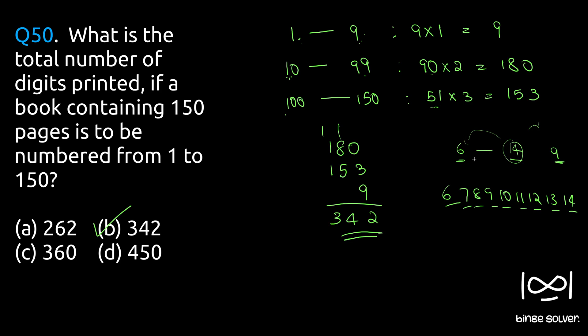That's what we used in all these cases: 99 minus 10 plus 1, 150 minus 100 plus 1, and 9 minus 1 plus 1. That's how we got 9, 90, and 51. The solution to Question 50 is B: 342. Thank you.